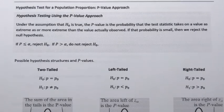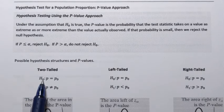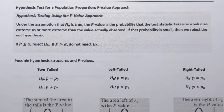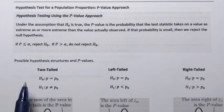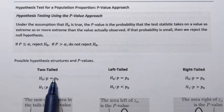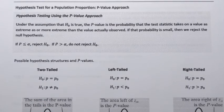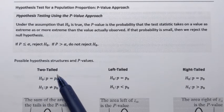When we conduct hypothesis testing we deal with two statements. One statement is called the null hypothesis, denoted by H0 or H-sub-zero. The second statement is called the alternative hypothesis, or H1. When we conduct hypothesis testing for a population proportion, the null hypothesis H0 will always state that the population proportion is equal to a specific value, and the alternative hypothesis will state that the value of the population proportion is somehow different from the value indicated in H0.